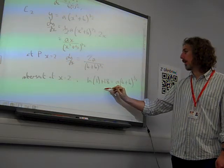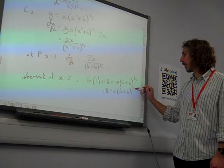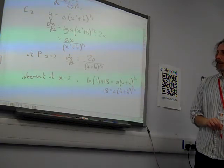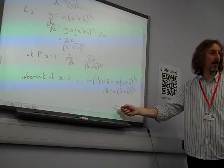So ln1 has to be 0. 18 is a times (4 plus b) to the half. OK, we appear to be establishing some things here. We've got this equation. Let's hold on to that, we'll come back to that later.